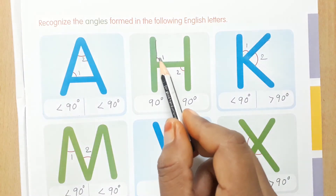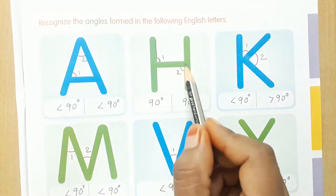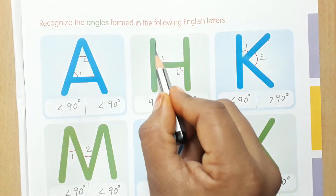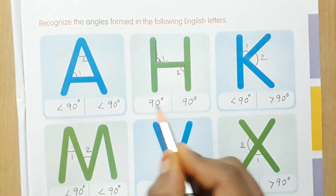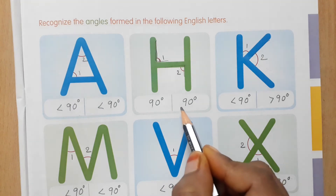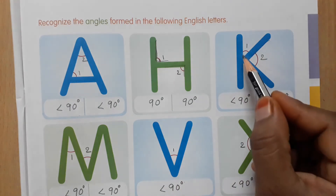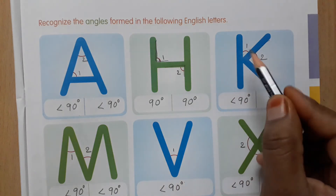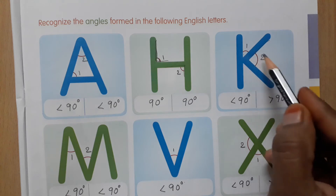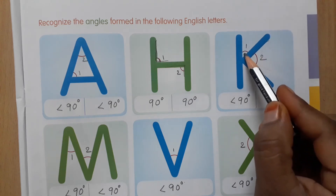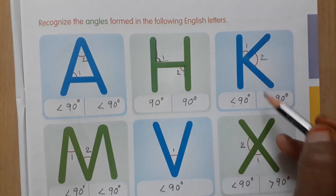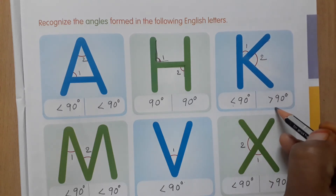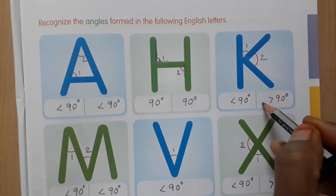Next, here H: two angles — these two are right angles, 90 degrees angles. Next, the letter K: two angles are here. One is less than 90 degrees, meaning acute angle. The second one is the obtuse angle, more than 90 degrees angle.